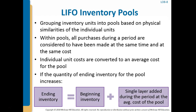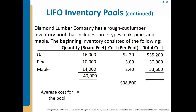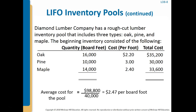The objectives of using LIFO inventory pools are to simplify recording by grouping inventory units into pools based on physical similarities of individual units, and to reduce the risk of LIFO layer liquidation. Within pools, all purchases during a period are considered to have been made at the same time and at the same cost. Individual unit costs are converted to an average cost for the pool. If the quantity of ending inventory for the pool increases, ending inventory will consist of the beginning inventory plus a single layer added during the period at the average acquisition cost for that pool. The average cost for this pool is $2.47 per board foot, which is $98,000 divided by 40,000 board feet.